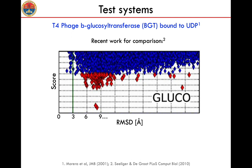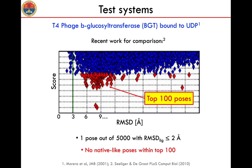Also in this case, we have a recent computational work for comparison. This is a paper published in 2010 by Seeliger and de Groot, in which they used an algorithm called T-Concord to generate holo-like conformations starting from the apo structure of 10 systems, including beta-glucosyl transferase. They were unable to find for this particular system binding poses with an RMSD from the experimental structure lower than 2 Å. In fact, they found only one such pose out of more than 5,000 ones, and that pose was not among the top 100.